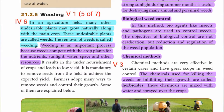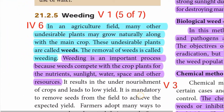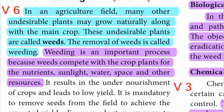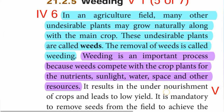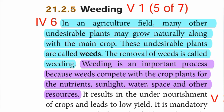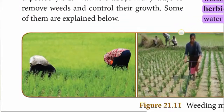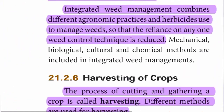Fifth point — weeding: In an agricultural field, many other undesirable plants may grow naturally along with the main crop. These undesirable plants are called weeds. The removal of weeds is called weeding. Weeding is an important process because weeds compete with the crop plants for nutrients, sunlight, water, space, and other resources.